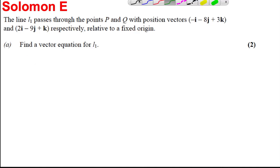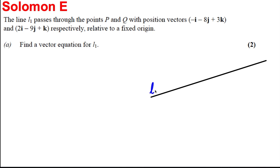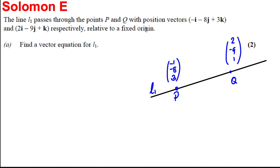Firstly, a picture to help us. This is a slightly different question. Here's line L1. We know that P and Q are on the line. P has position vector negative 1, negative 8, and 3. Q has position vector 2, negative 9, and 1 with respect to the origin. Find the equation of the line.